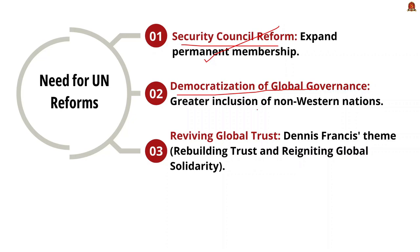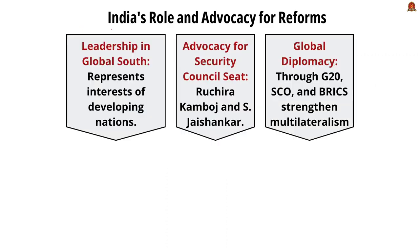The second way forward is democratization of global governance. As the P5 countries are dominated by Western nations, there should be inclusion of non-Western nations and emerging economies. The third is reviving global trust — proper conflict mediation, more powers given to peacekeeping missions, and strengthening multilateral diplomacy by eliminating or curtailing veto powers for P5 countries. This will revive global trust in the United Nations.